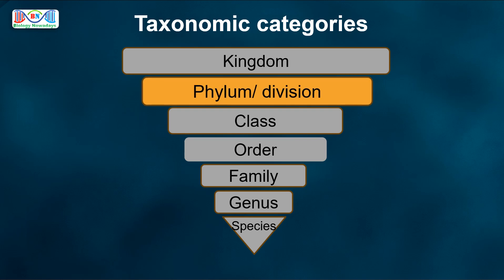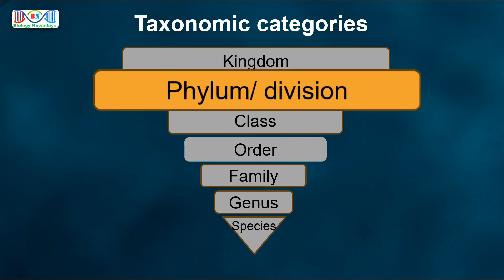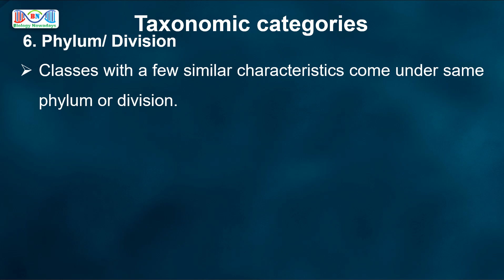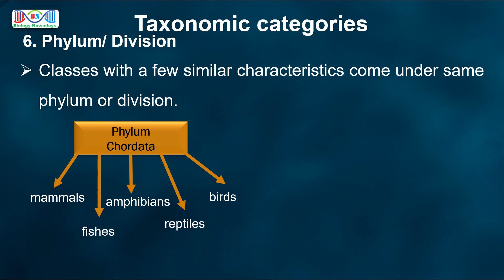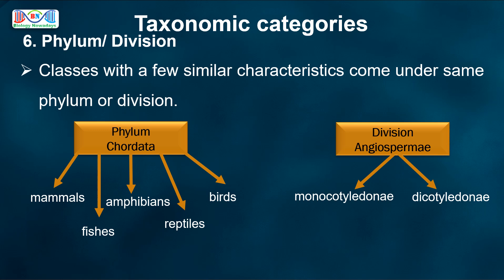Next higher category is Phylum in case of animals, or Division in case of plants — the plural form of Phylum is Phyla. Classes with a few similar characteristics come under the same Phylum or Division. For example, animals belonging to various classes like Mammals, Fishes, Amphibians, Reptiles, Birds, etc., come under the Phylum Chordata, based on common features like the presence of Notochord and Dorsal Hollow Neural System. In case of plants, classes Monocotyledonae and Dicotyledonae are grouped under the division Angiospermae, because they are all flowering seed plants.